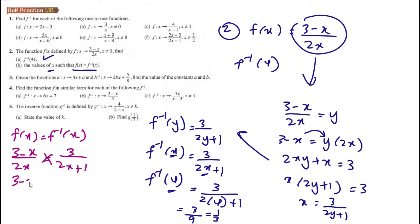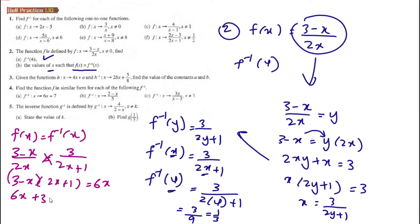We cross multiply: (3 minus x) times (2x plus 1) equals 2x times 3, which is 6x. Expanding the left side: 3 times 2x is 6x, plus 3, minus 2x squared, minus x equals 6x.